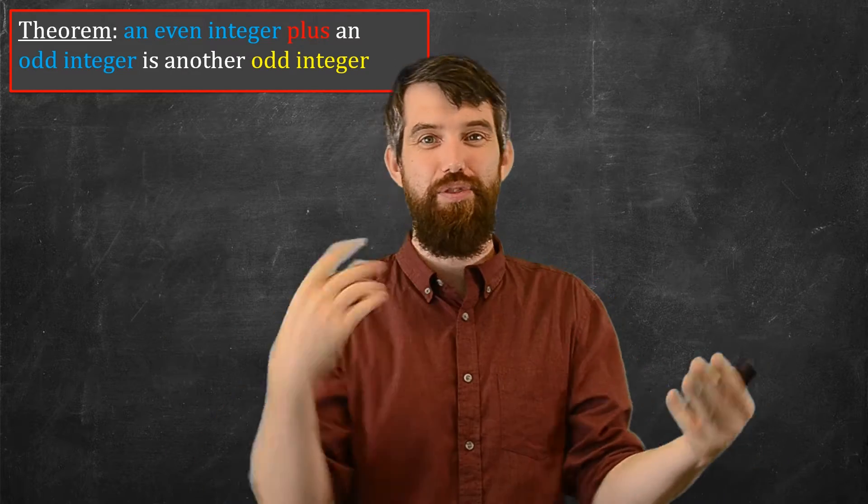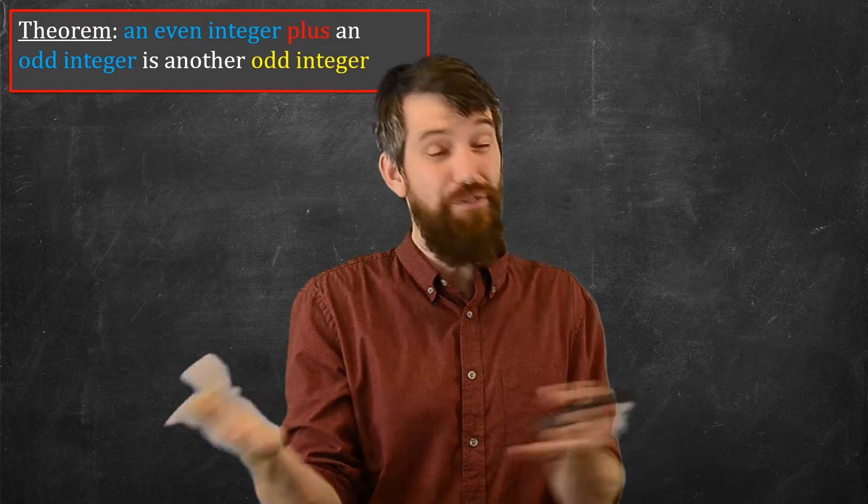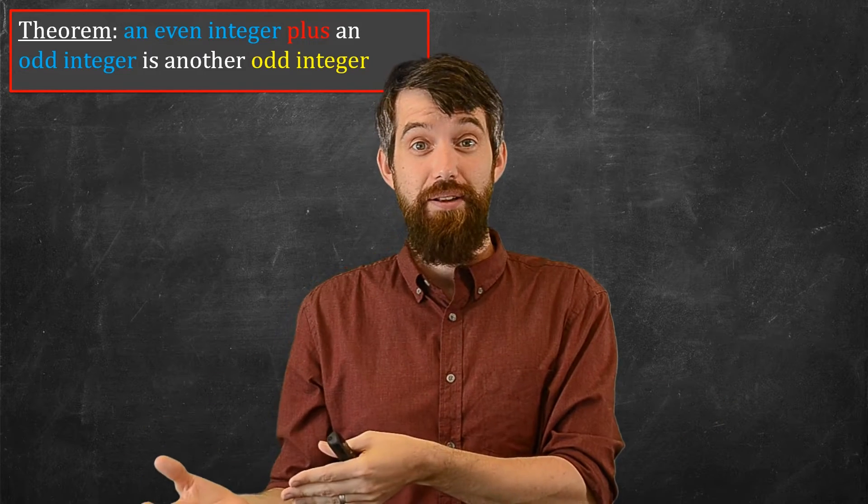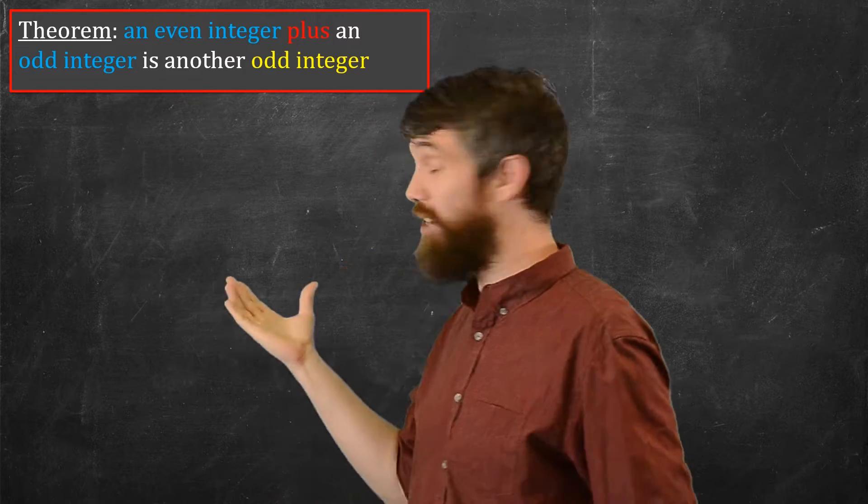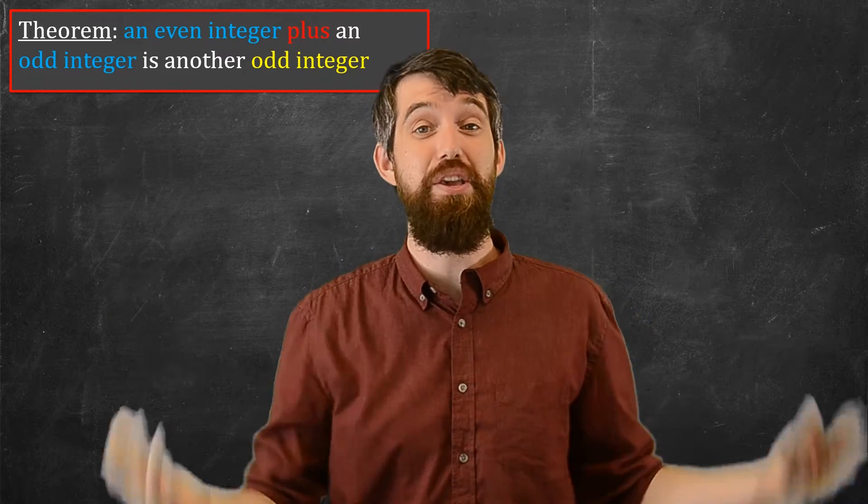Like for example, 2 plus 3, that's an even and an odd, and it adds up to 5, which is another odd. Now, that seems straightforward, but are you 100% convinced that this theorem is true for every possible way you can do it?